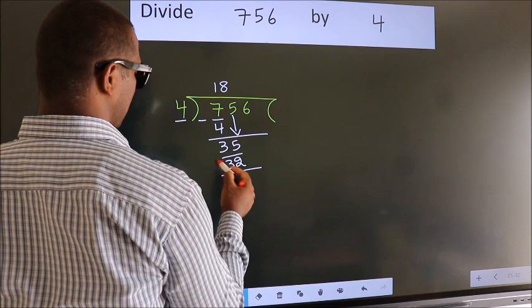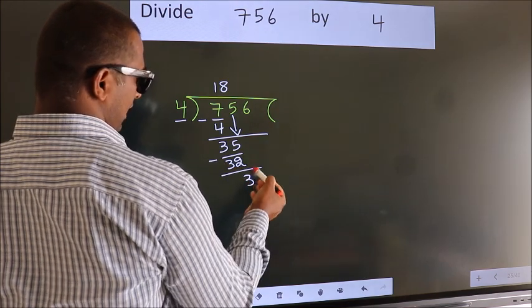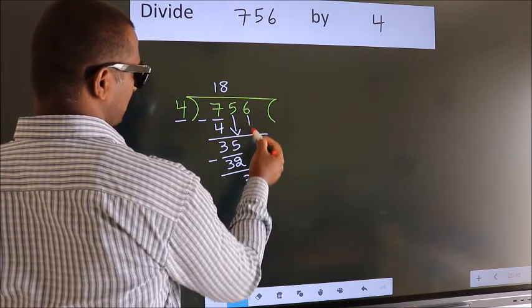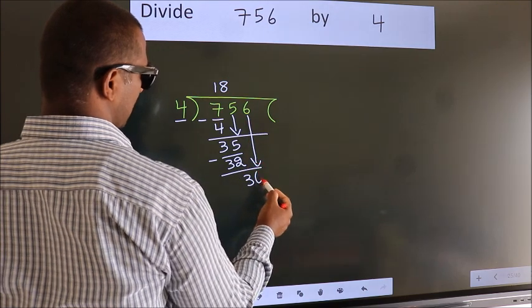Now, we subtract. We get 3. After this, bring down the beside number. So, 6 down.